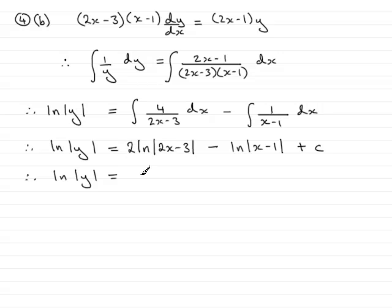I hope you remember that, that this is the same as the natural log of 2x minus 3, all to the power 2. Just bring that number in the front up as a power. I'll put that in mod signs, and then we have minus the natural log of x minus 1 plus c.